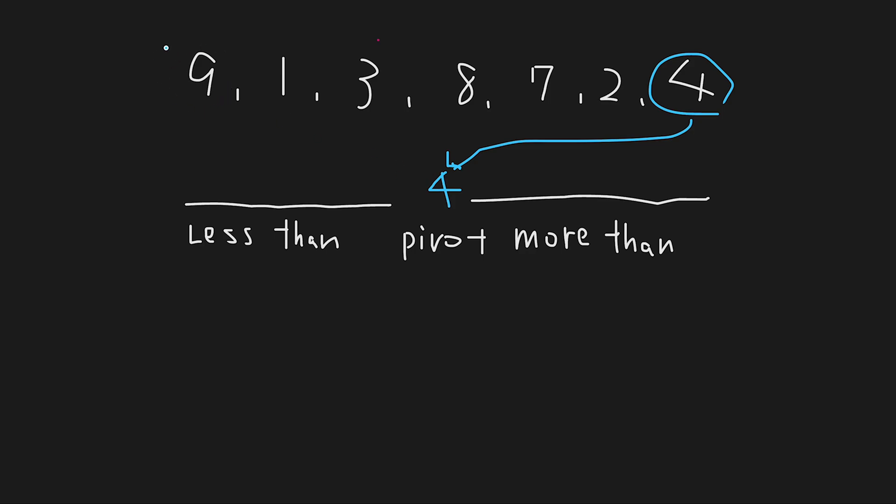Then we divide all numbers into two parts. We find 9, which is more than 4, so I put 9 in this place. How about 1? 1 is less than 4, so I put it here. Same thing, 3 is less than 4, so I put it here. 8 goes here. 7 goes here. And 2 goes here.